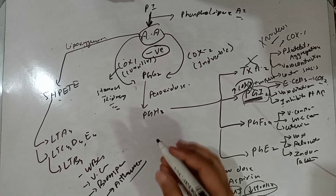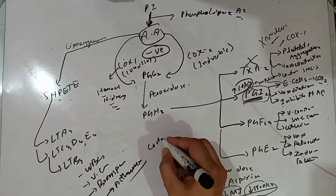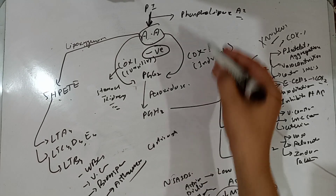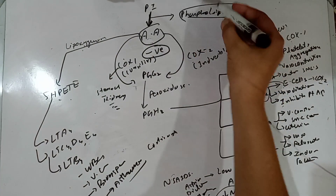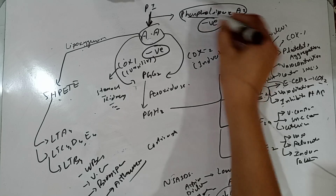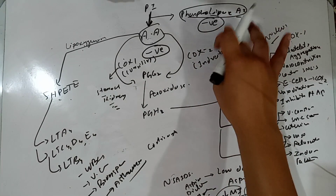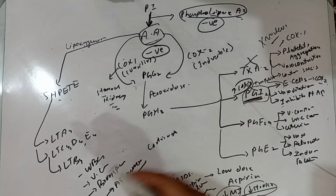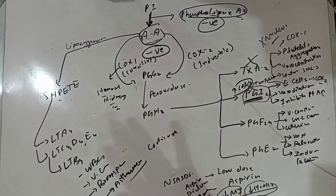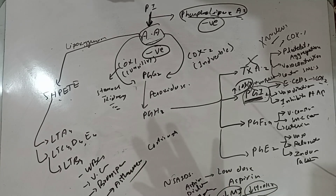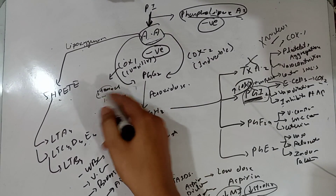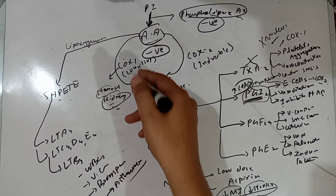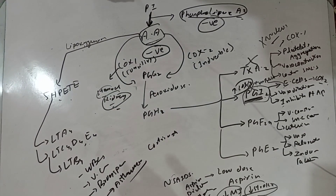Corticosteroids inhibit the enzyme phospholipase A2. When they inhibit this function, no arachidonic acid is formed, so neither COX-1 nor COX-2 pathways are active — all these pathways are inhibited. This is how corticosteroids play their anti-inflammatory role. However, side effects on the stomach and kidneys still occur due to inhibition of COX-1.